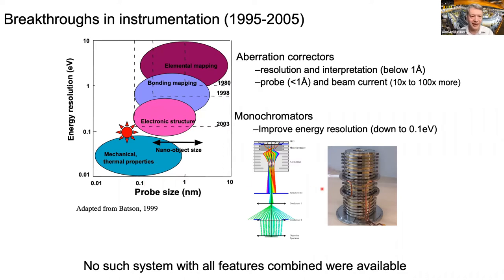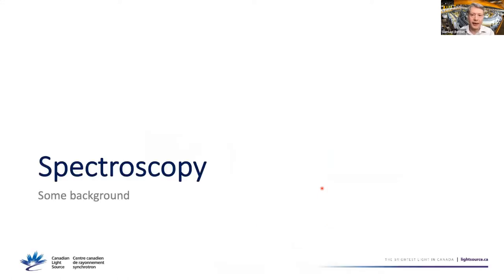This is what these instruments look like. McMaster got number three in the world, and combining the two instruments, the McMaster microscope gave the best scientific outcomes among early systems. It's not always best to have the first model — it's good to have one where the problems have been sorted out.